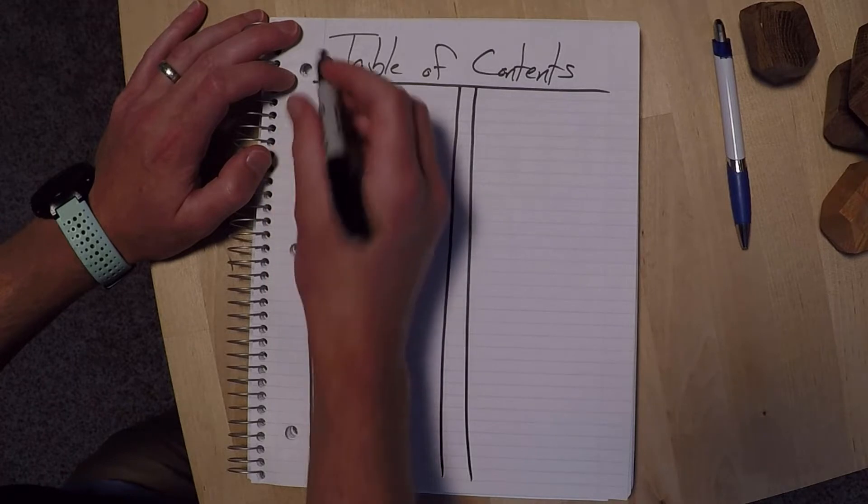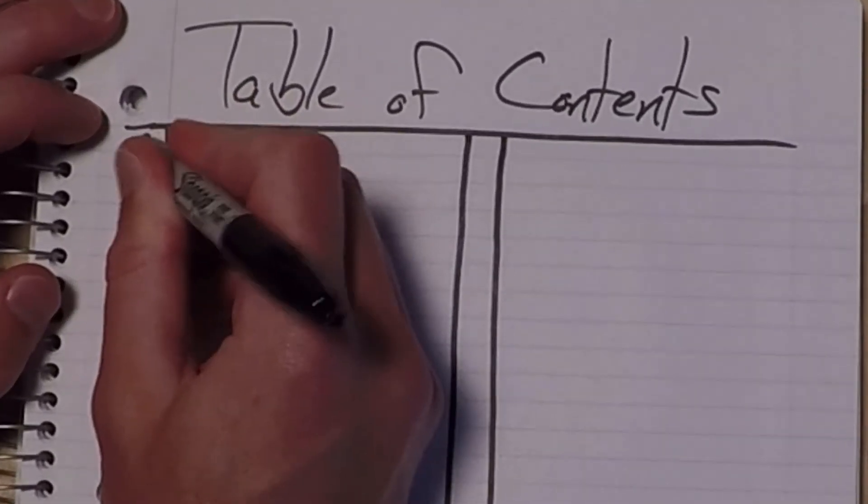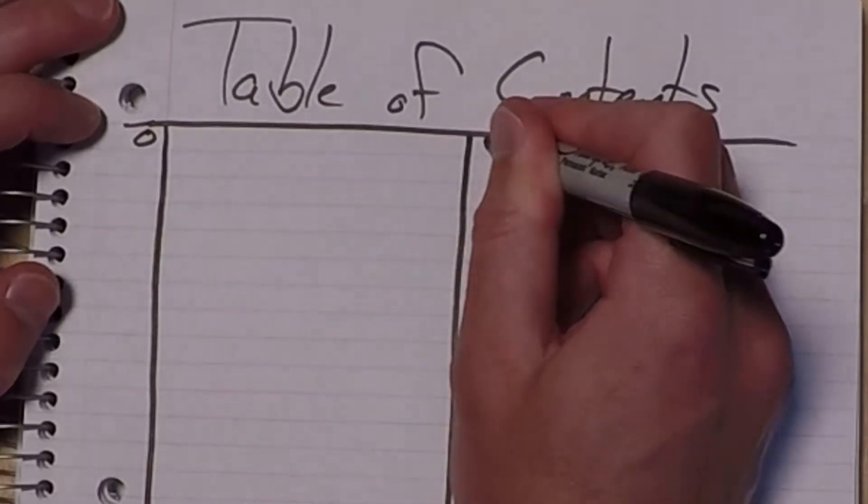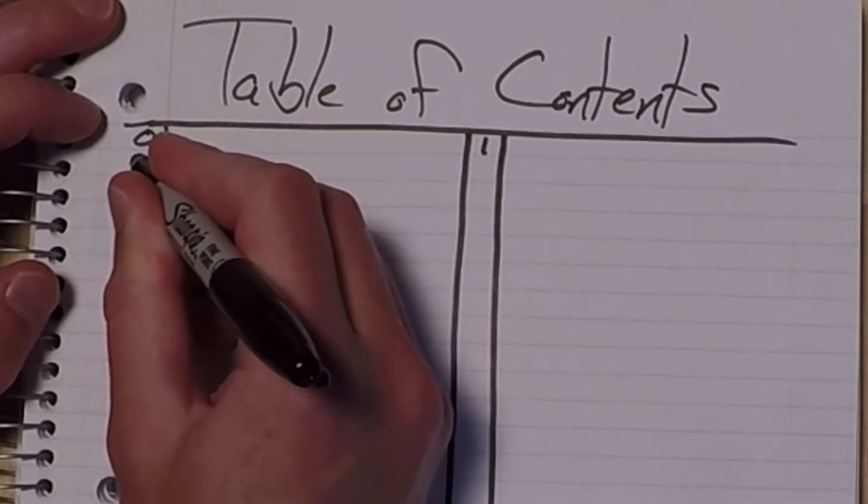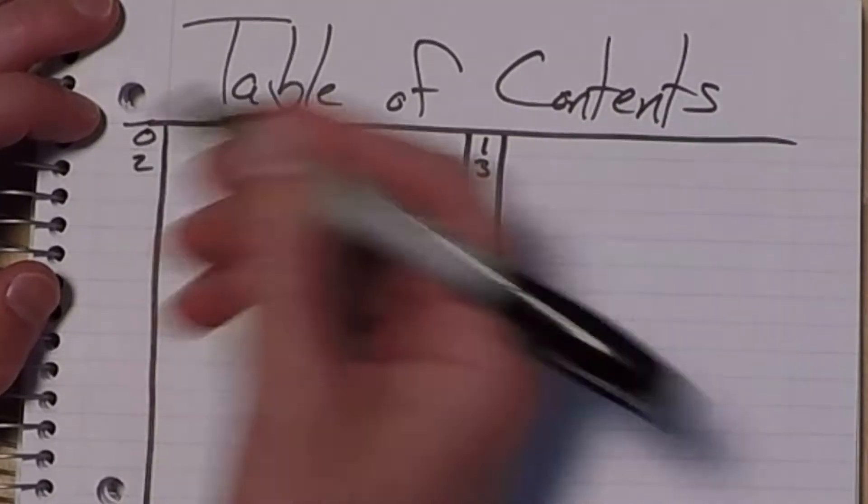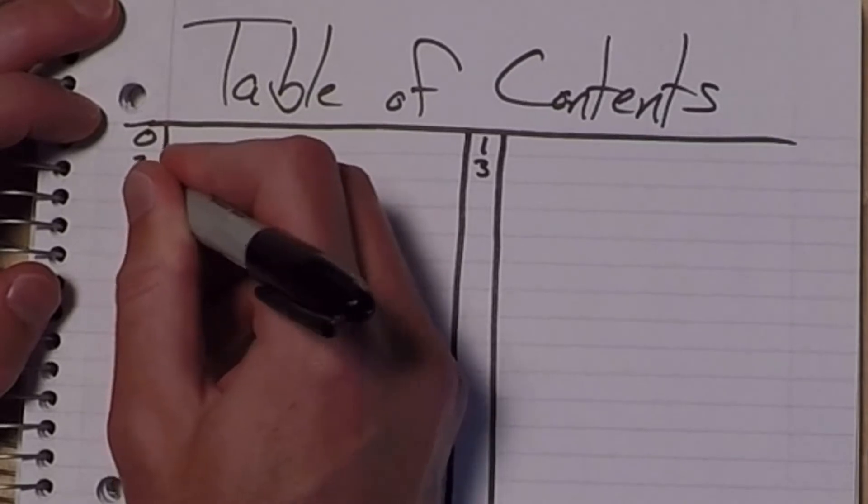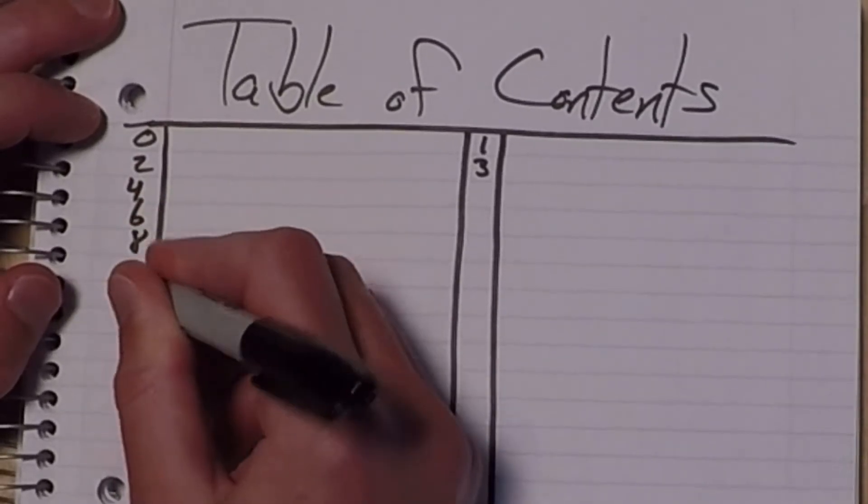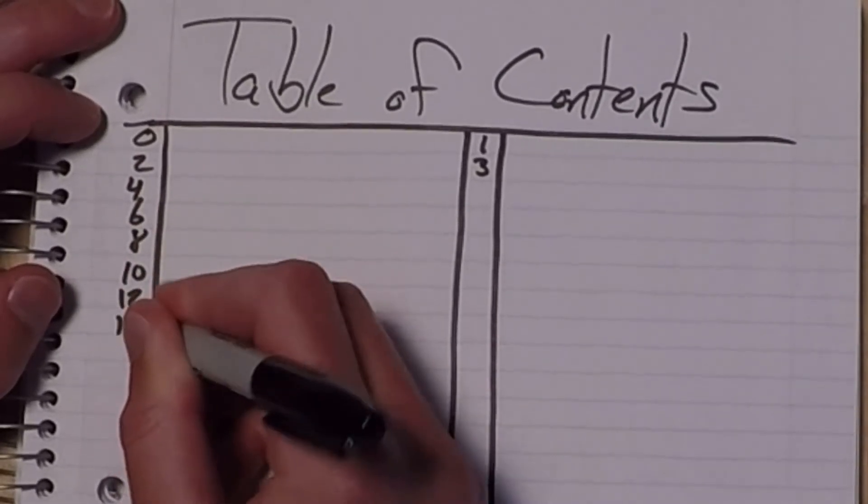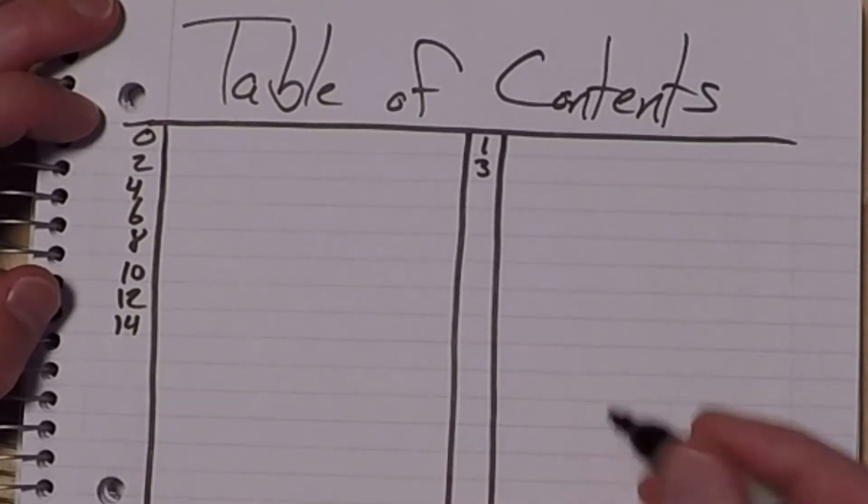So up here I'm actually going to start with zero. And then this will be one, and then two, and three, or I could just number it zero, two, four, six, eight, ten, twelve, fourteen, and so on down that side.